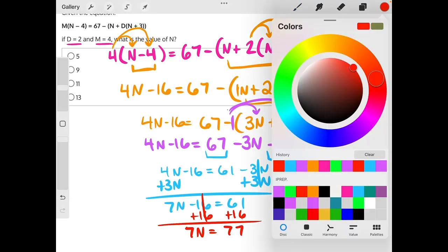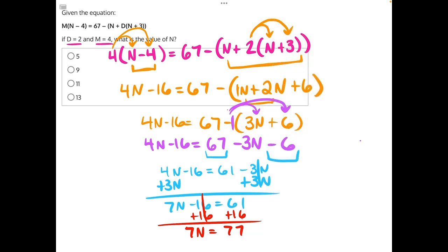Then, for our last step, 7 is being multiplied to n, so the opposite operation is dividing both sides by 7. These 7's will cancel, giving us n is equal to 77 divided by 7 is 11, making that our correct answer.